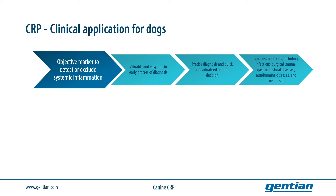CRP measurement starts the process of a precise diagnosis and can improve individualized patient decisions, resulting in reduced care time and improved patient outcome. For example, high CRP levels will alert the veterinarian to an urgent treatment of the inflammation, while an exclusion of inflammation can guide the diagnostic process to other underlying causes.